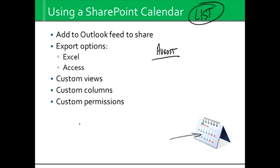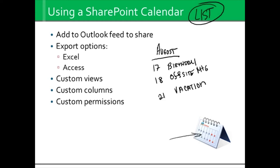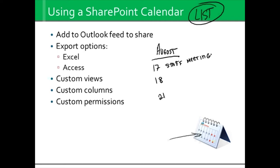Or that list could be appointments you have in August — maybe the 17th for your birthday, the 18th you have an off-site meeting, the 21st you're going on vacation. Now this looks more like a personal calendar, but it's an example because it's a list of events. Now let's take that list and create actual work-based events. Say on the 17th we have a staff meeting. Think about what types of information you have on an event: most people have the date, the event name, and the start and finish times.